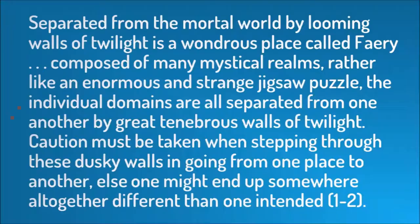Here is how McKiernan describes this setting at the beginning of the story: 'Separated from the mortal world by looming walls of twilight is a wondrous place called Faerie. Composed of many mystical realms rather like an enormous and strange jigsaw puzzle, the individual domains are all separated from one another by great, tenebrous walls of twilight. Caution must be taken when stepping through these dusky walls and going from one place to another, or else one might end up somewhere altogether different than one intended.' Immediately, readers are grounded in the magic and rules of this land and given the opportunity to imagine what might be behind these walls of twilight.